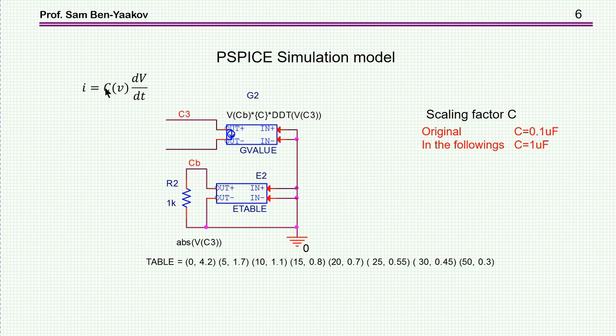In our case, this capacitance is voltage-dependent. That is, it depends on the voltage across the capacitor. What we do, we start with a current source. G-value is a current source. It has two inputs that you can make the output a function of them, but you don't have to. You can just write an expression.